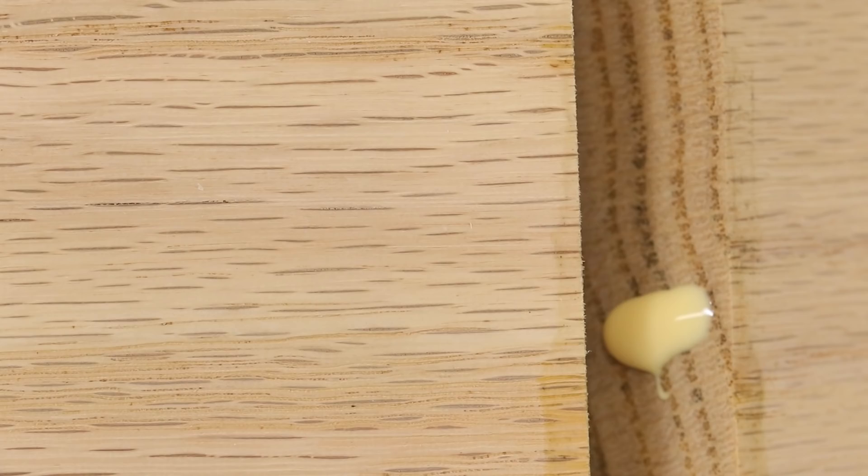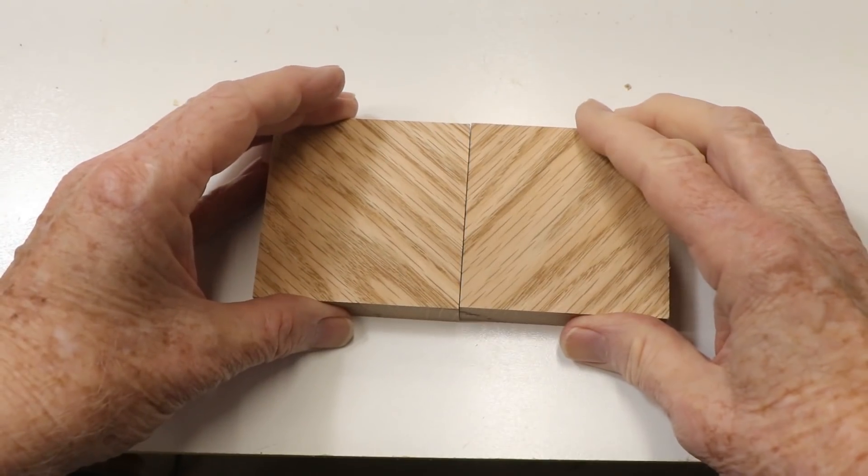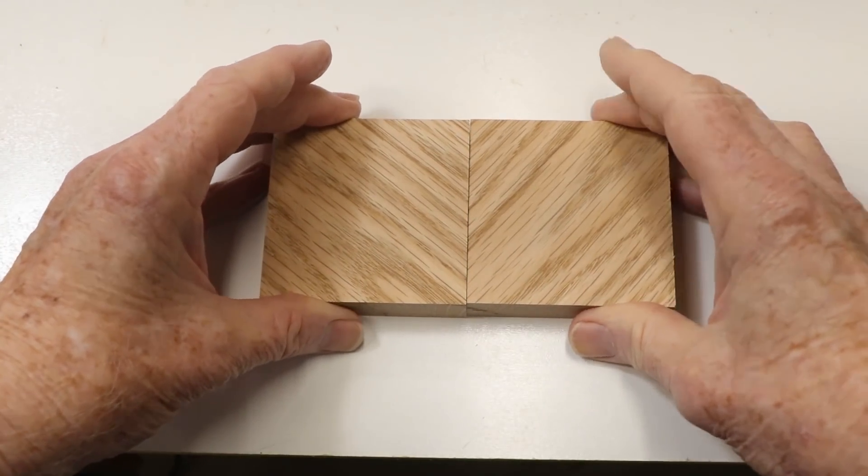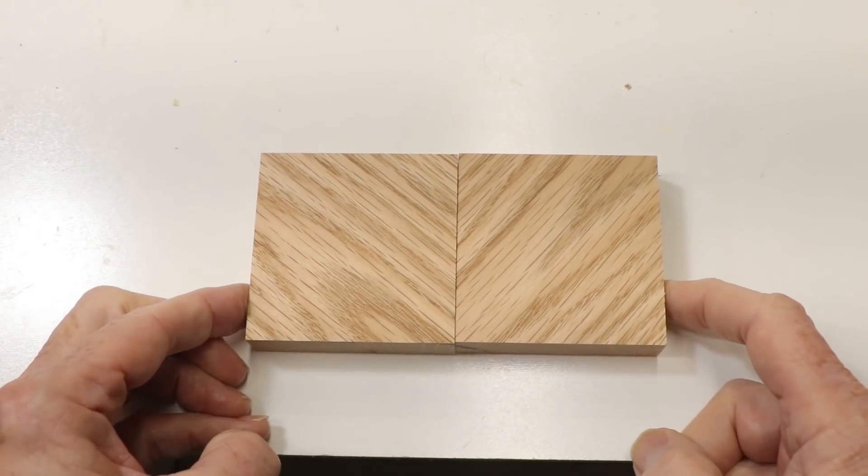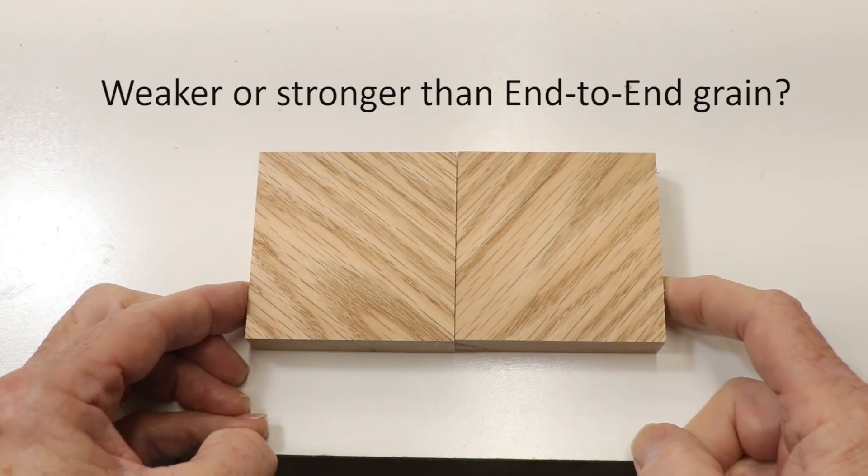So my first question is, how strong are joints cut at 45 degrees to the grain direction? This is halfway between end-grain and side-grain. Does that grain orientation weaken it or strengthen it?